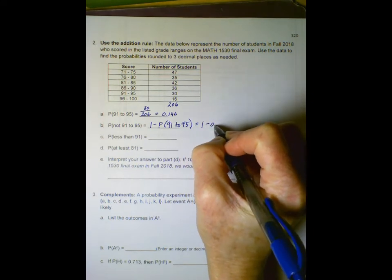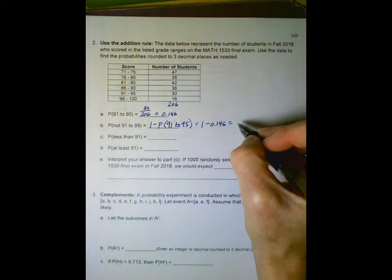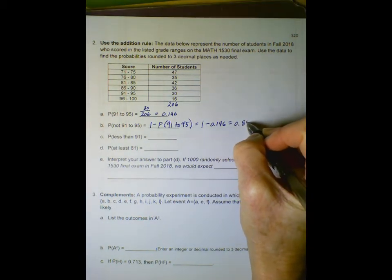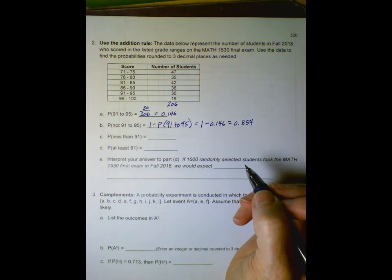So our answer would be 0.854. Using complements can often be the quickest way to answer a question.